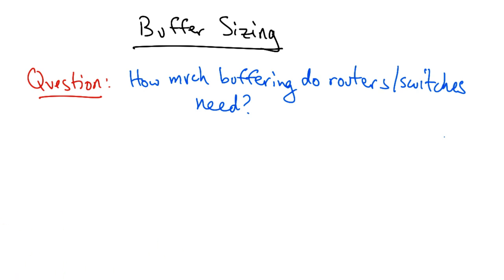Now, given that queuing delay is really the only variable part of packet delay on the internet, you'd think that we'd know the answer to this question already. And for quite some time, there'd been some well understood rules of thumb. But it turns out that we've recently revisited this question and come up with some different answers.